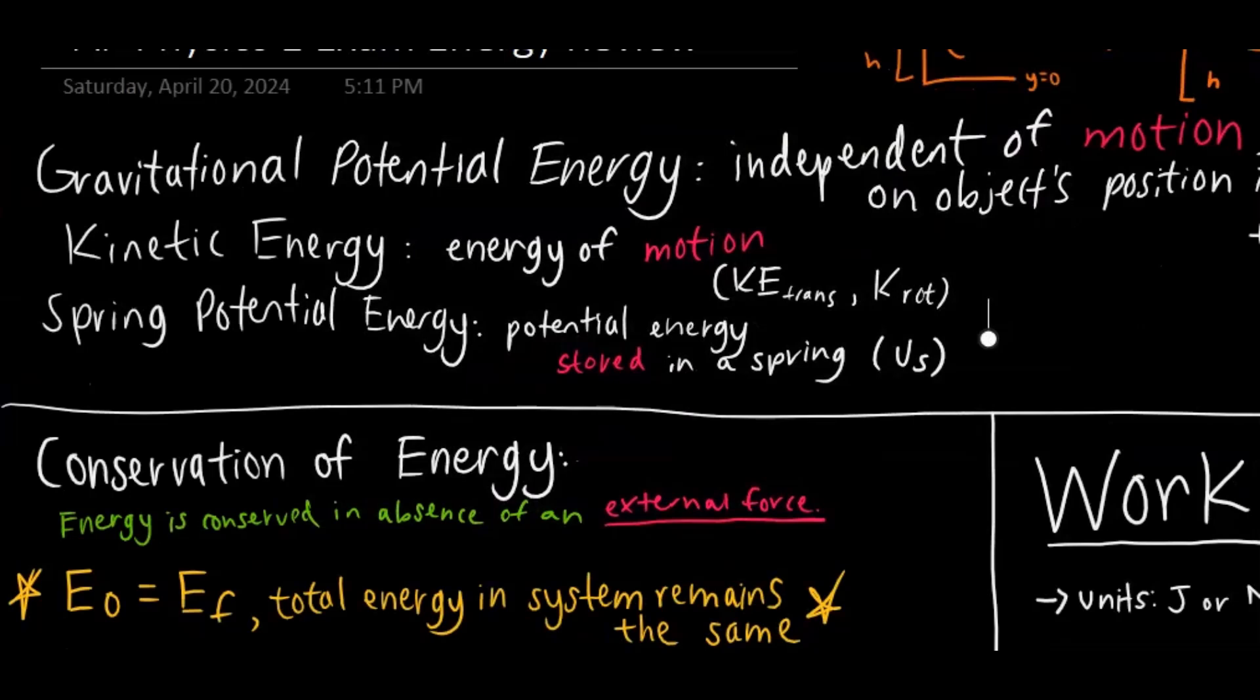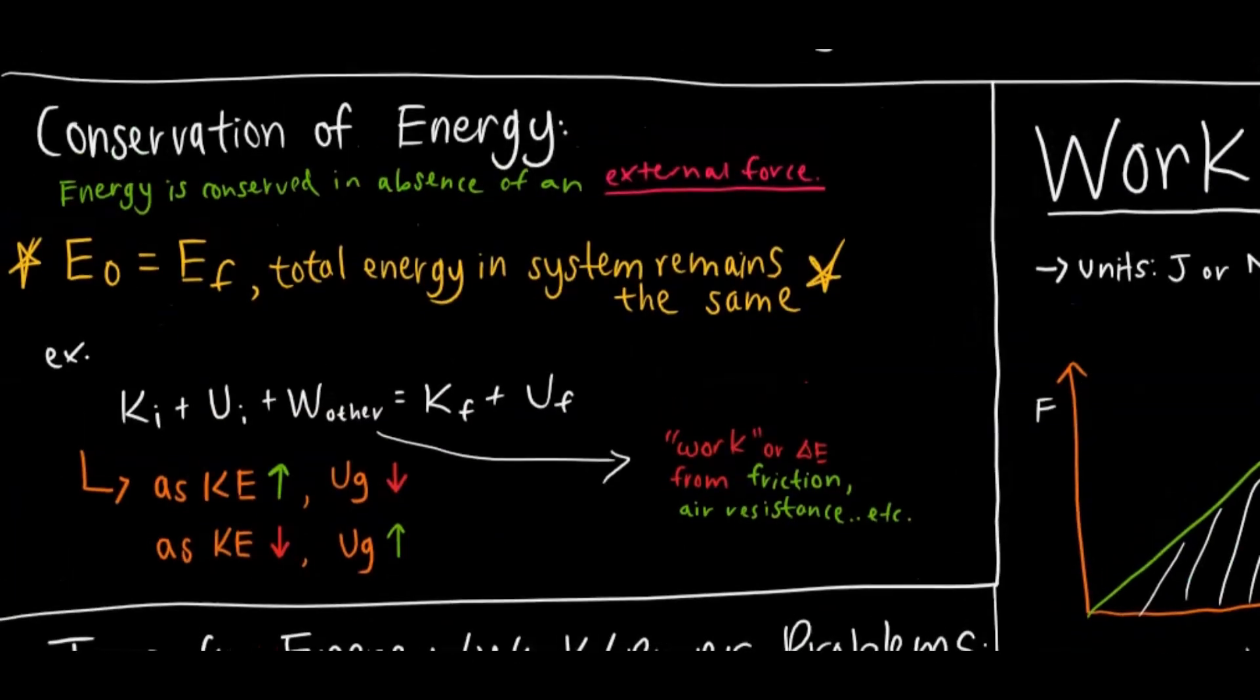So the next type of energy is kinetic energy. Kinetic energy is just the energy of motion. And you can see this through translational or linear kinetic energy or rotational kinetic energy. And the final one is spring potential energy. So that's just potential energy that is stored in a spring. And there are other ones like electrical energy, but those aren't really relevant for calculations in this course.